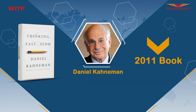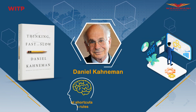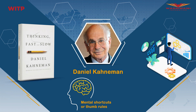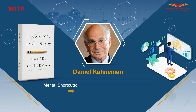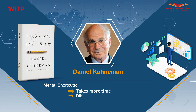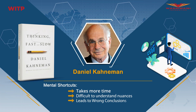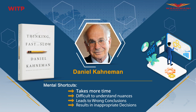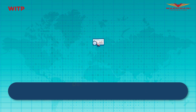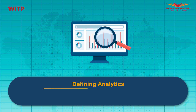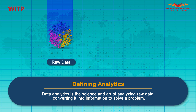Nobel laureate Daniel Kahneman showcased in his 2011 book 'Thinking Fast and Slow' that humans are often overwhelmed with data. We use heuristics — that is, mental shortcuts or thumb rules — to make decisions. These mental shortcuts are often fine, but many times we fail to understand the nuances of all the data, leading us to form wrong conclusions and make inappropriate decisions.